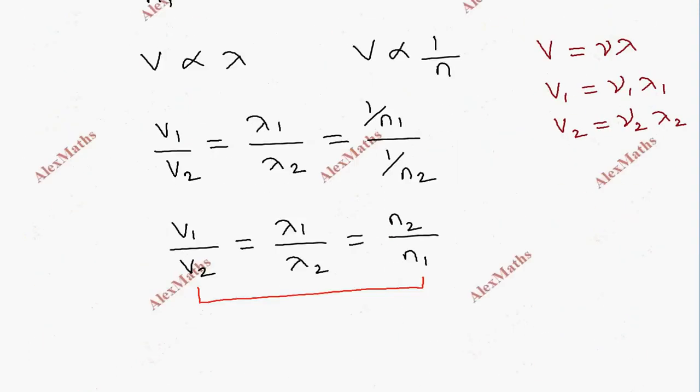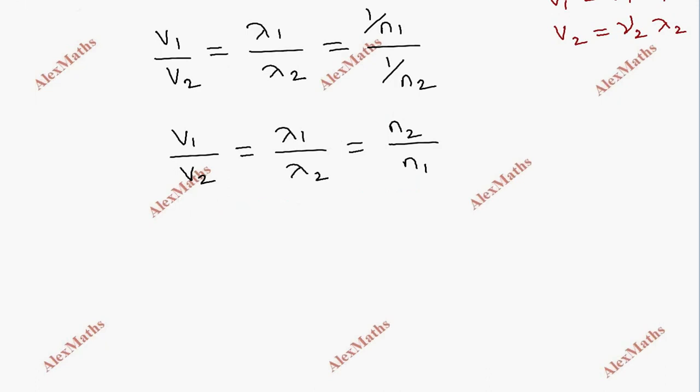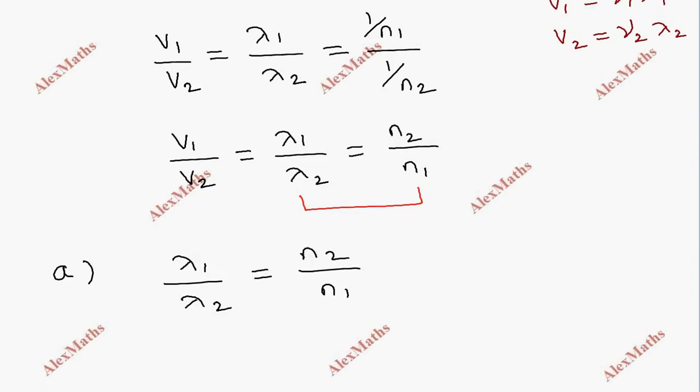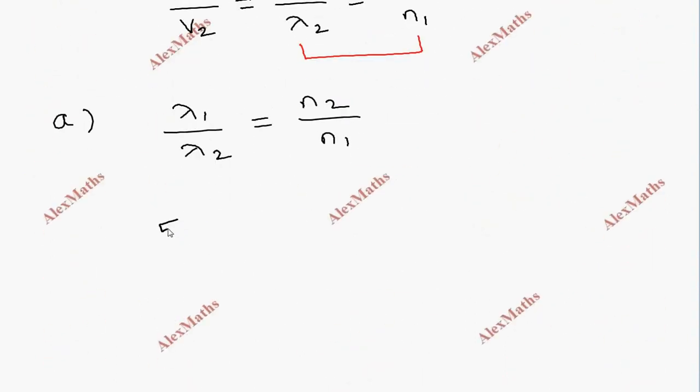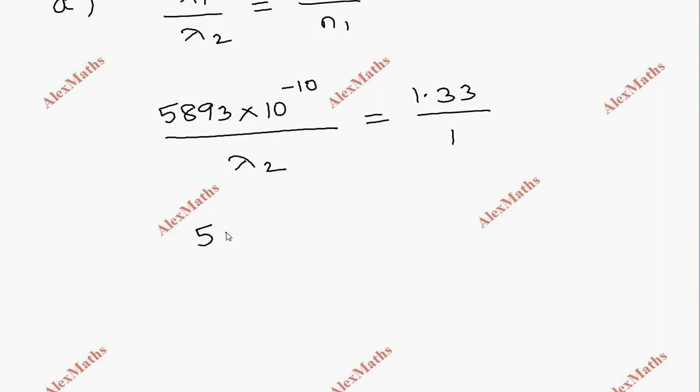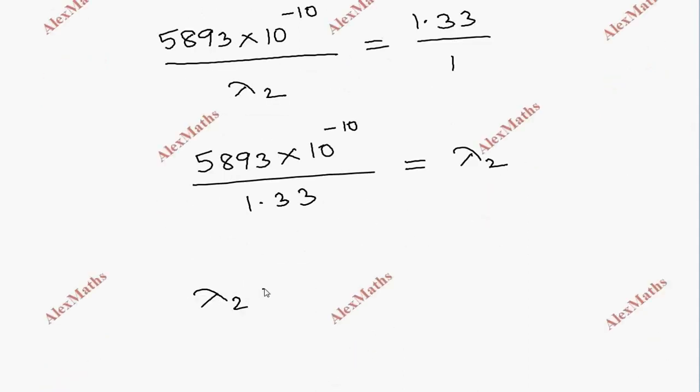First, let's find lambda 2. Lambda 2 equals lambda 1 times n1 by n2, which equals 5893 times 10 power minus 10 divided by 1.33. This gives us lambda 2 equals 4430 times 10 power minus 10 meters.